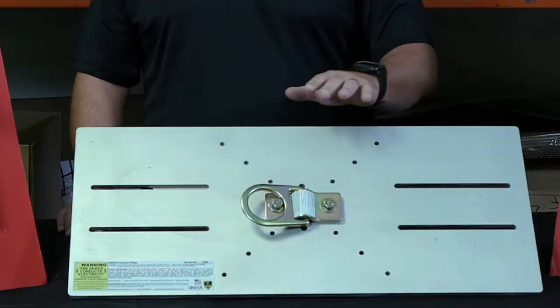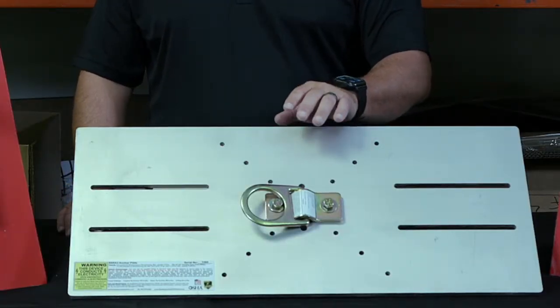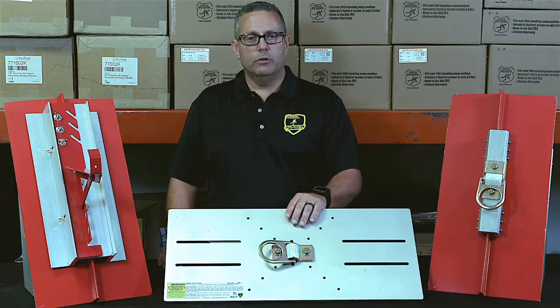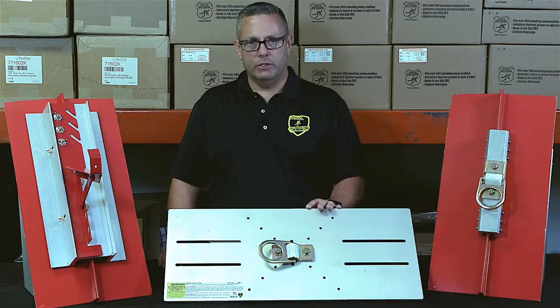The other thing you can do is add the SSRA3 Anchor Plate. This is primarily used for attaching horizontal lifelines to standing seam roofs.